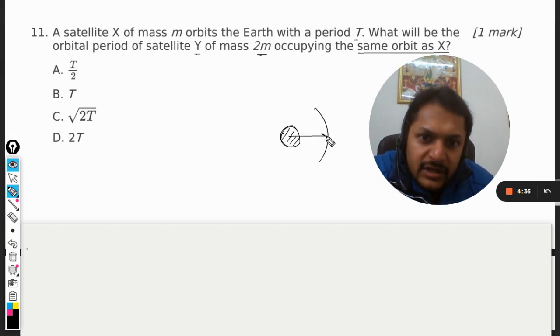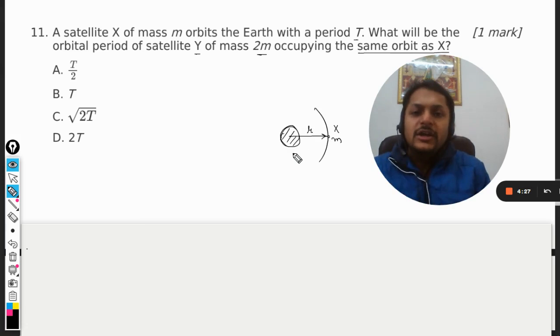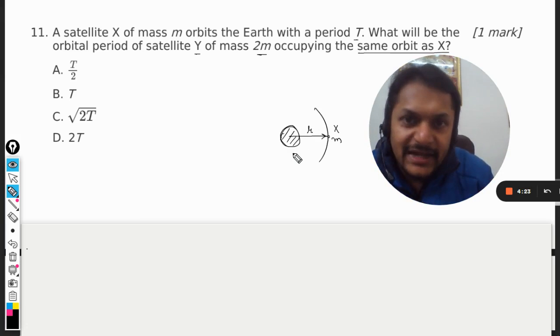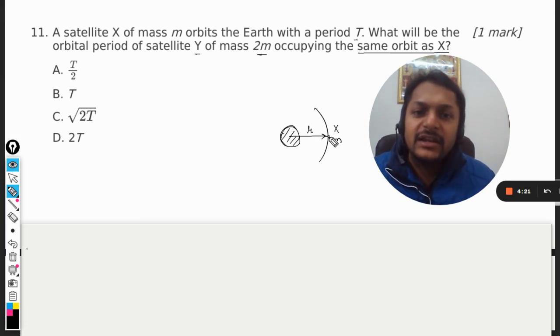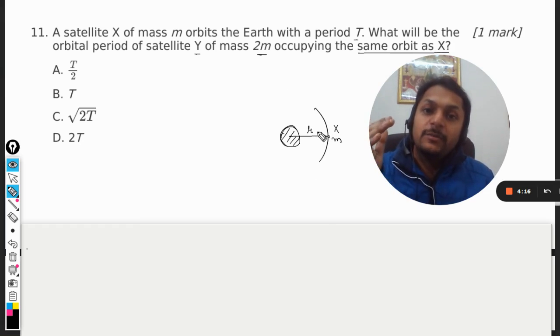This satellite of mass m, let us call it X or something, so the radius of this orbit is small r. The question talks about the time period, that is the time taken by the satellite to reach the same position once again, once around the circle. We have to find that time.